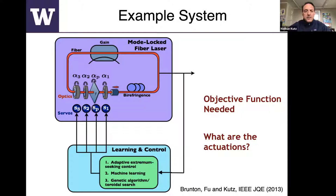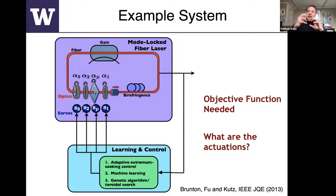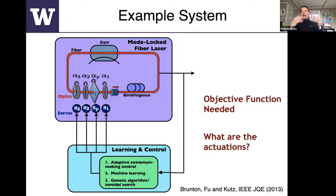The example system is a mode-locked fiber laser. You bring gain into the system, pump energy in, and you have an output coupler. Importantly, you have a set of quarter wave plates, half wave plates, and a polarizer which help create the mode-lock state. The laser works through nonlinear polarization rotation, which creates a wobble in the polarization state of the electric field.